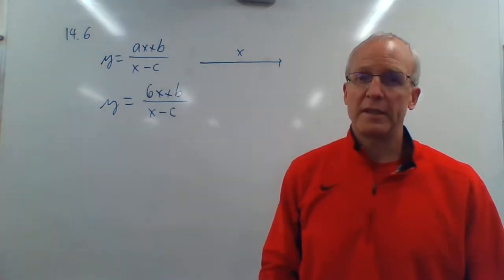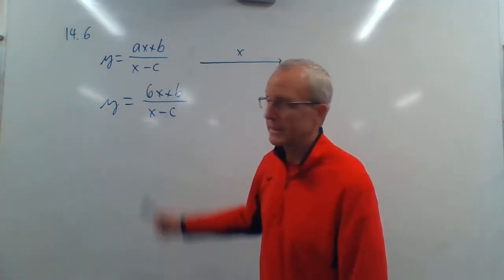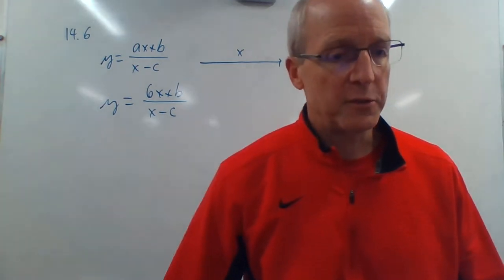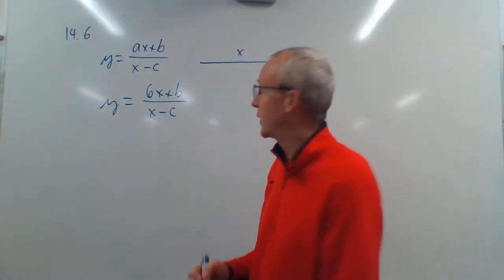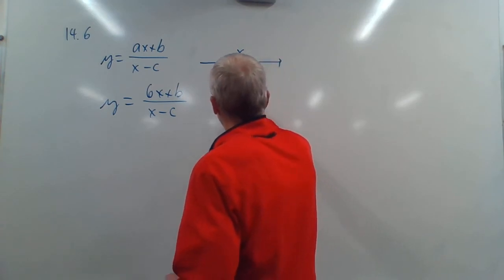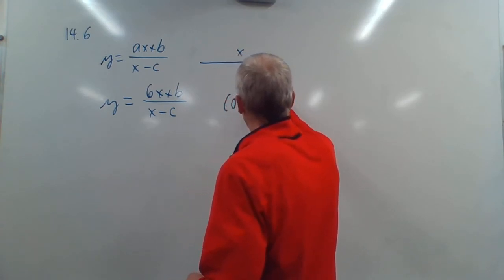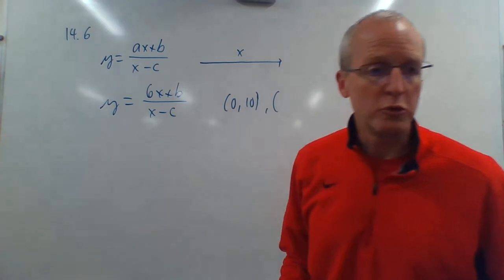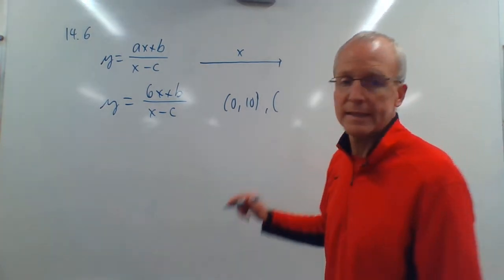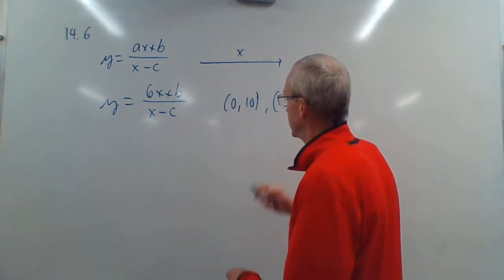Now, they have to give us two other things to figure out the other two letters, B and C. And they do. They say that it passes through these two points, 0, 10, X equals 0, Y equals 10, and they pass through 3, 7. So X equals 3, Y equals 7.